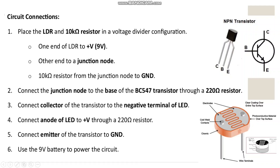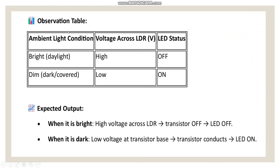We are using a 9-volt battery in the circuit. The LDR — it will look like this; the brown color is made by ceramic with a photo-conductive material coated over the top face, which acts as a sensor. The observation table shows ambient light condition, voltage across LDR, and LED status.